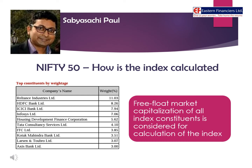The weights are rebalanced every day, while the index constituents are rebalanced semi-annually, twice a year in March and September. We can see that Reliance Industries, despite having such a huge market cap, has a weightage of about 11% based on its free float.